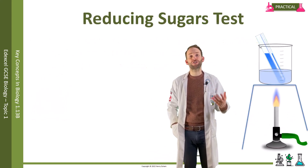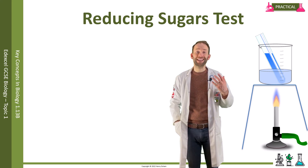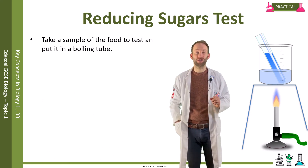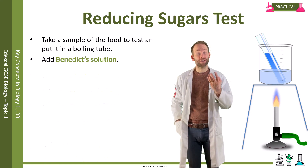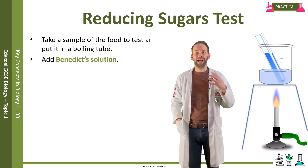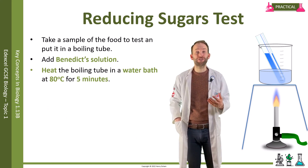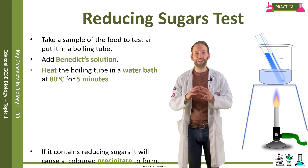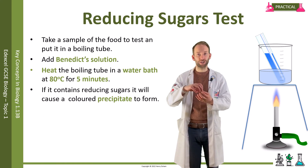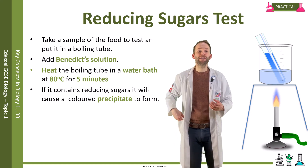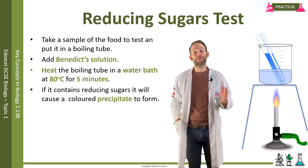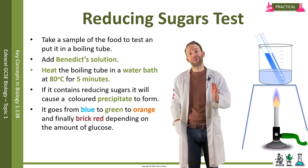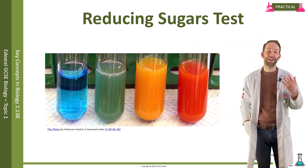Reducing sugars are small sugars, like glucose or fructose. To test for them, you take a small sample of the food and put it into a boiling tube — a boiling tube is just a larger test tube — and you add Benedict's reagent, which is a bright blue colored solution. You then heat the boiling tube in a water bath at about 80 to 85 degrees C for about five minutes. If the food contains reducing sugars, a colored precipitate will form — precipitate are solid particles suspended in the solution. The colors change depending on how much reducing sugar is present: no reducing sugar stays blue; a little goes green; then orange; and if there's lots of reducing sugar, it goes brick red.